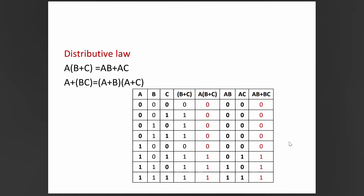The distributive law states: A·(B+C) = A·B + A·C, and A+(B·C) = (A+B)·(A+C). With three variables A, B, C, combinations go from 000 to 111. We verify by computing B+C and multiplying by A for the left side, then computing A·B and A·C and adding for the right side.